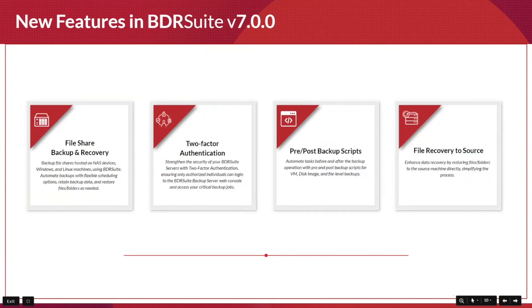Other new features in version 7.0 U1 include NAS backup or file share backup and recovery. Previously more agent-based, it has now been categorized toward file and folder level backup for NAS devices, network share devices, or file share devices. Backups can be stored directly in local storage, object storage, or cloud storage.